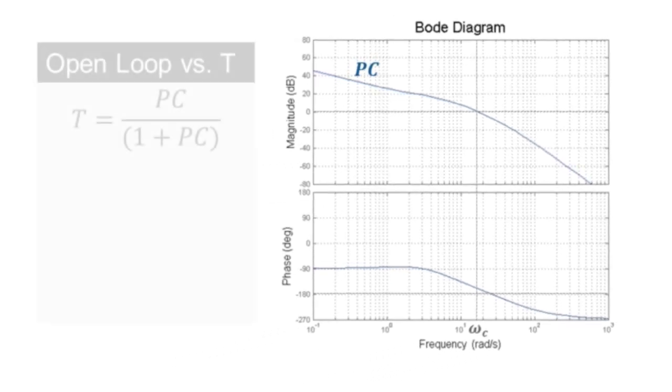We want to see how the complementary sensitivity transfer function T, PC over 1 plus PC, relates to the open-loop transfer function. Note that we cannot use superposition directly because there is a summation in the denominator. So we need to use our asymptotic approximation method to try to infer the shape of T from the given open-loop transfer function.